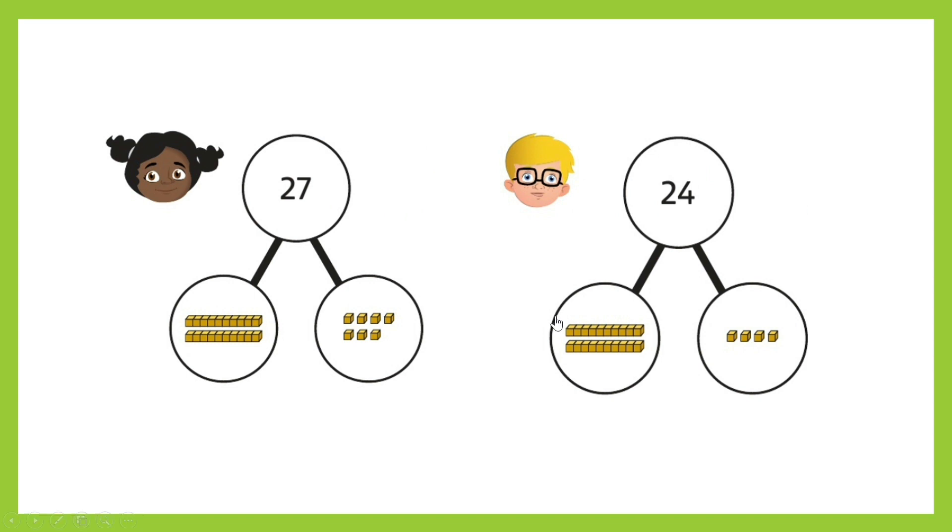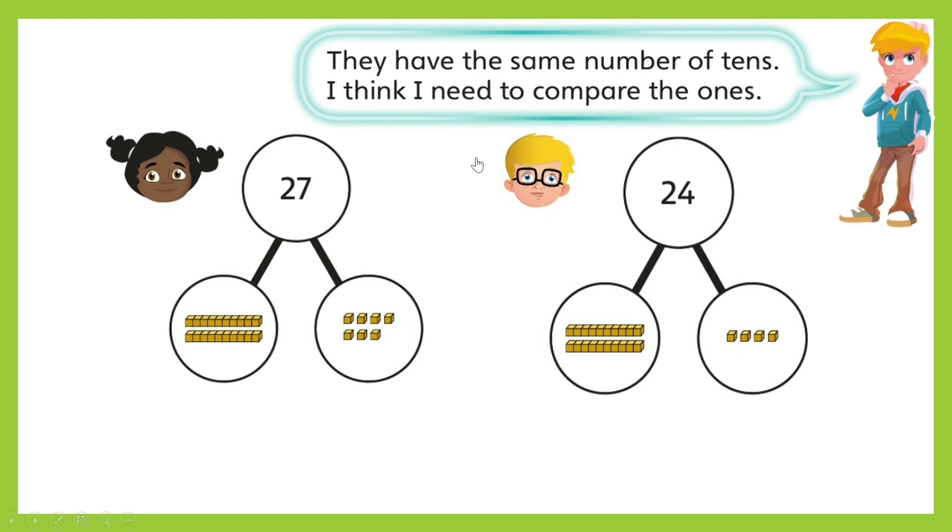Therefore, what can you use to help you compare these numbers? Let us hear what Dexter has to say. They have the same number of tens. I think I need to compare the ones. Do you agree or disagree with Dexter? How many ones does Ola's number have? That's right, 7 ones. How about Ben's number? 4 ones.